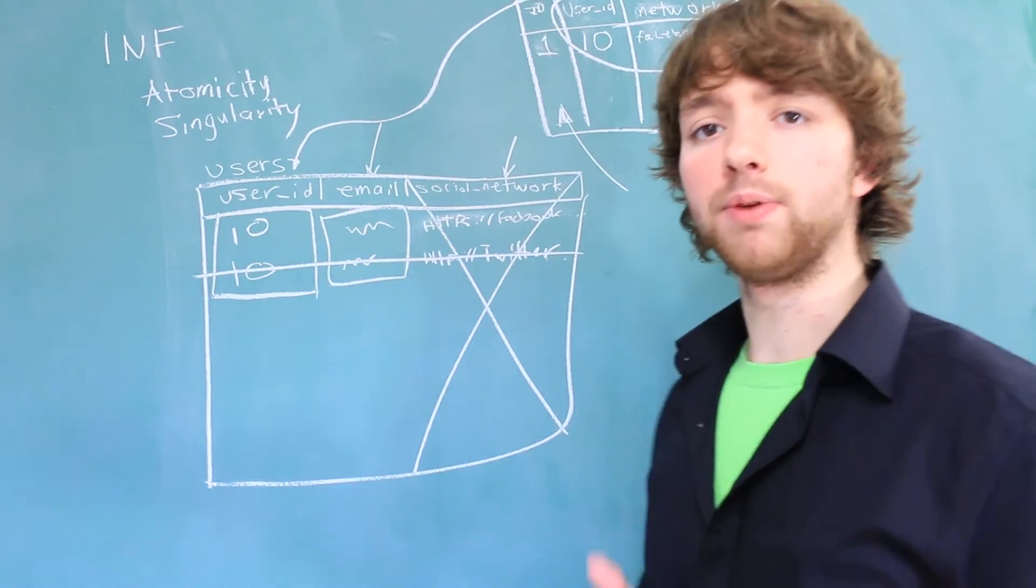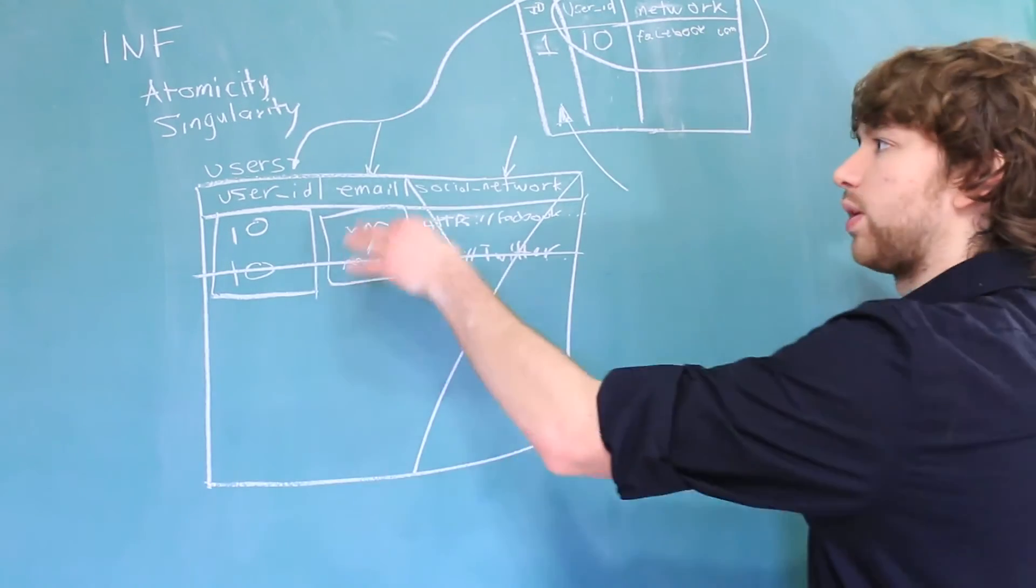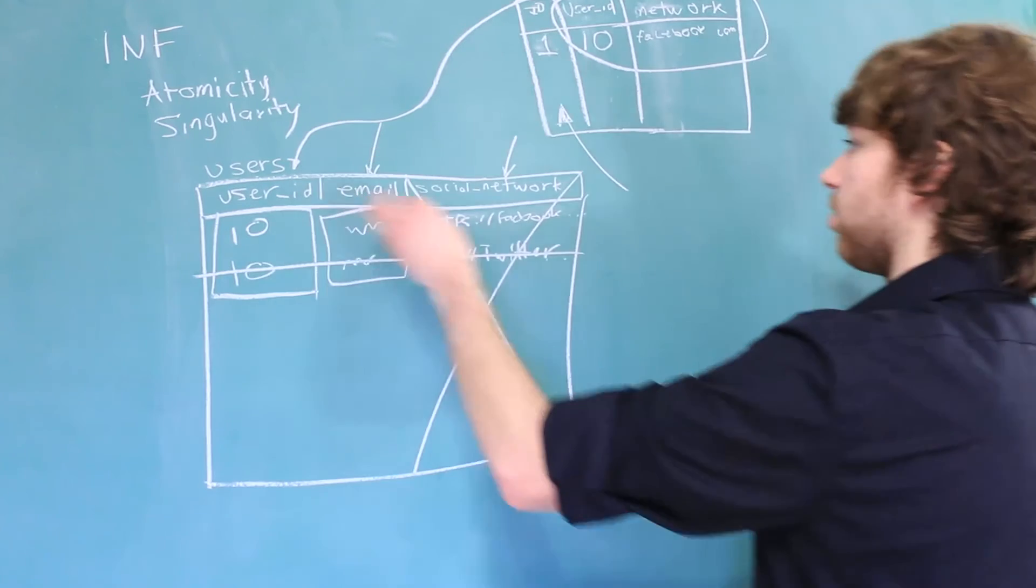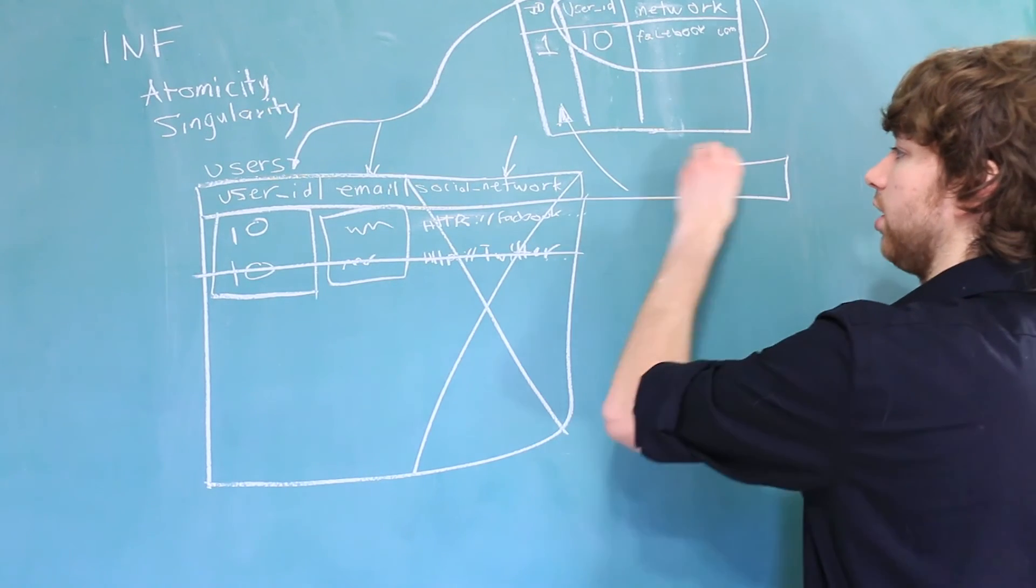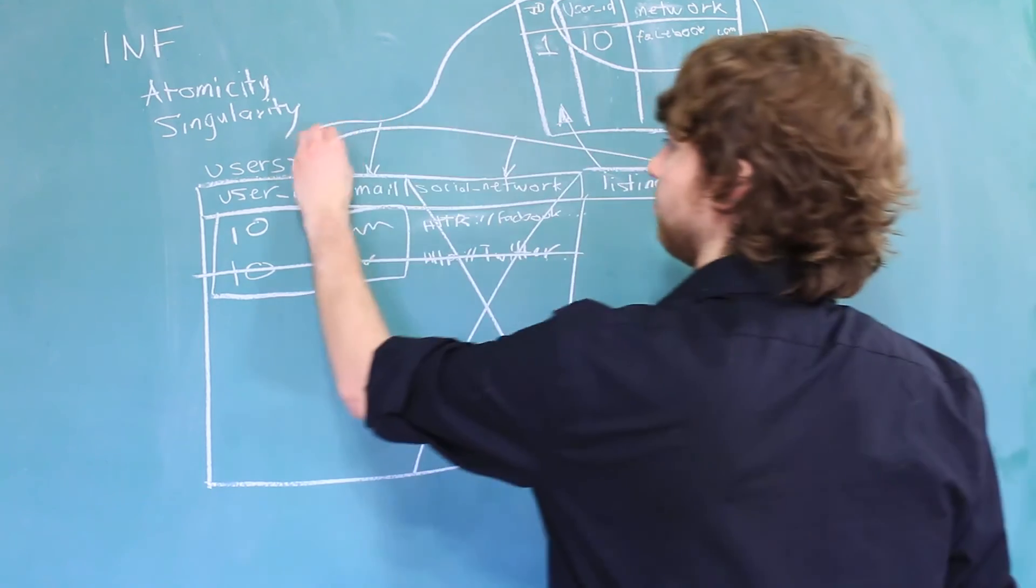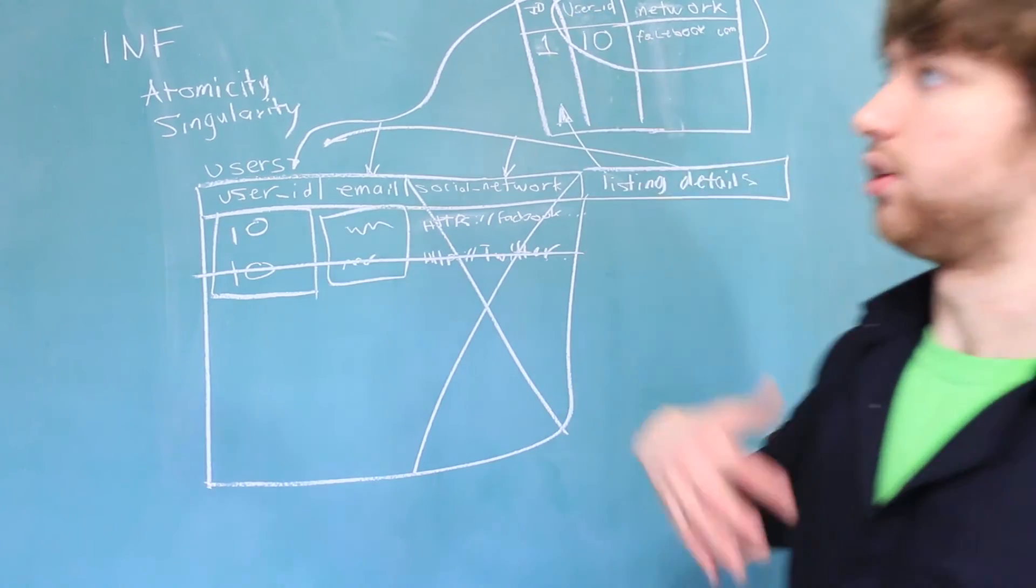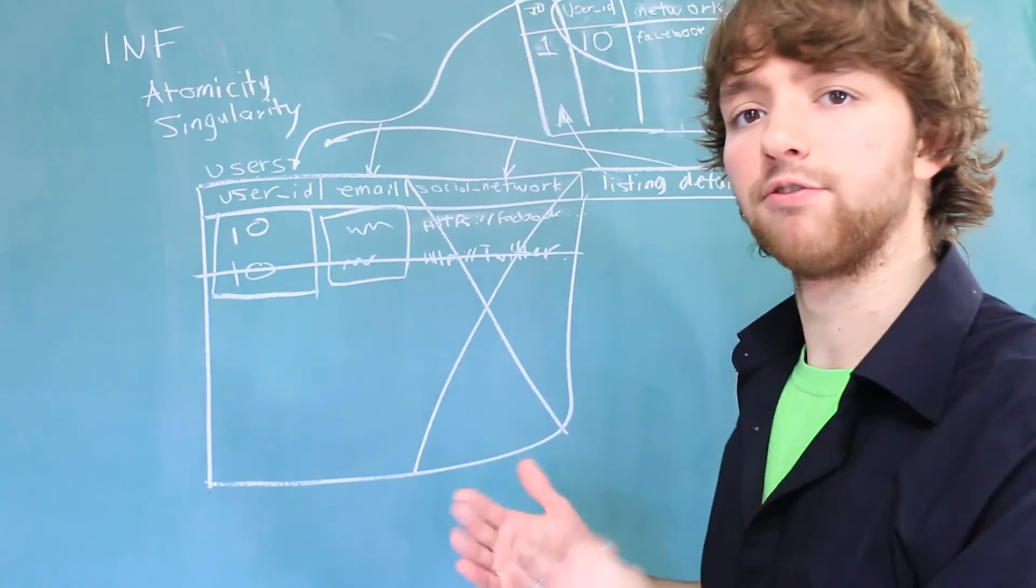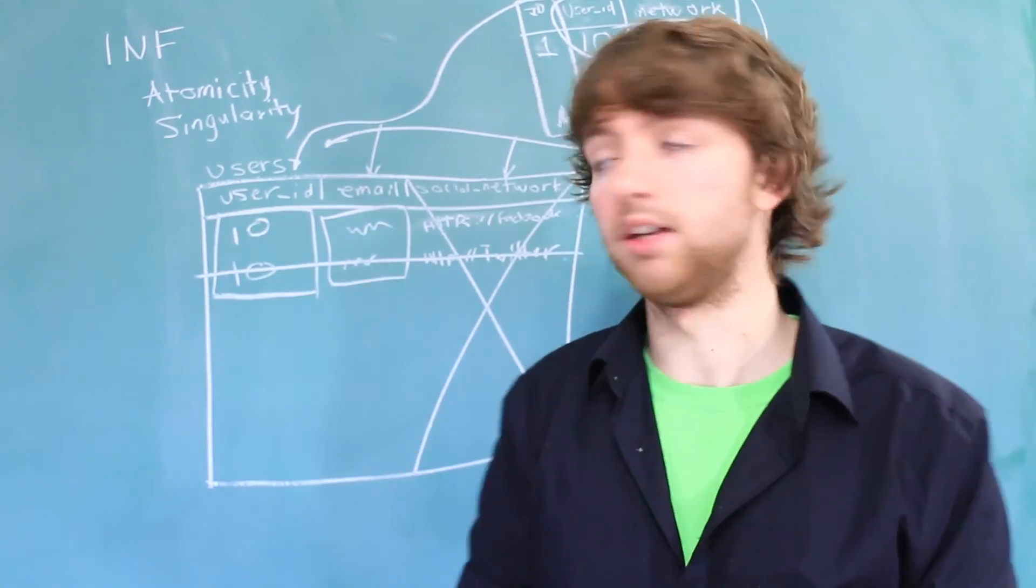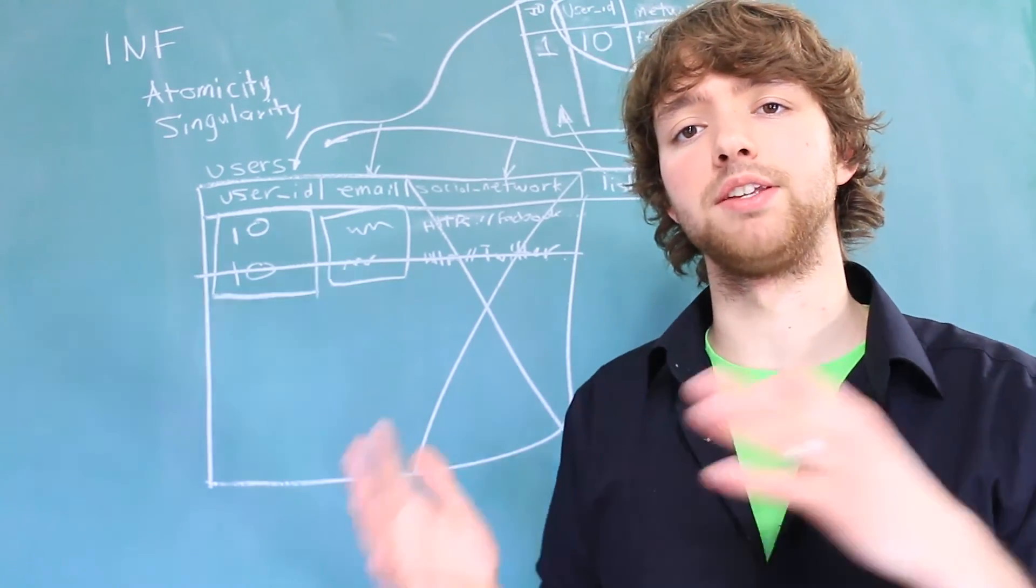The last thing with first normal form is that every column needs to describe the entity. So in this situation, we have a user table, so that means we couldn't have a column over here like listing details. That's because this doesn't even describe the user. So everything inside of first normal form, you could summarize it as every column describes the key, the user ID in this situation, and every column describes it singularly.